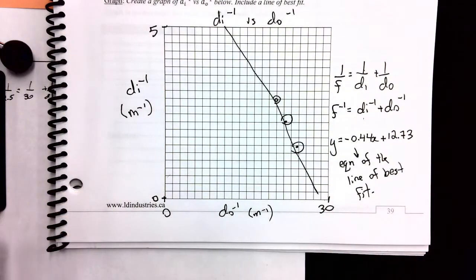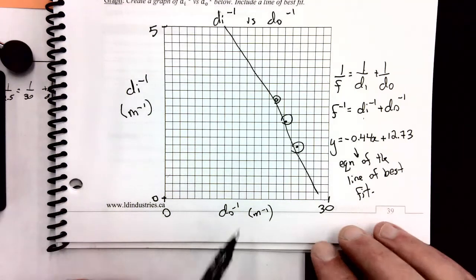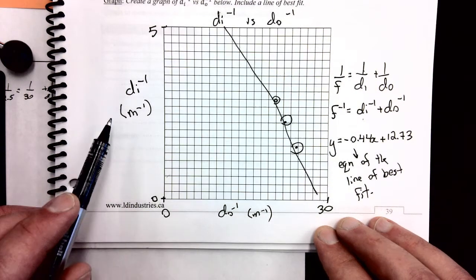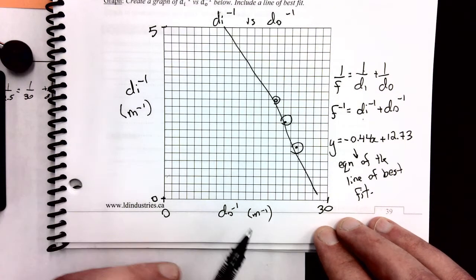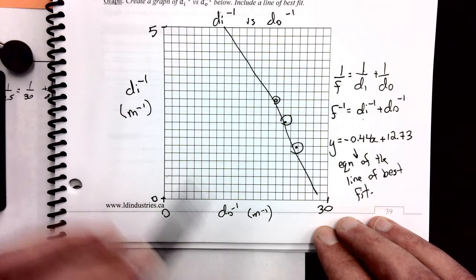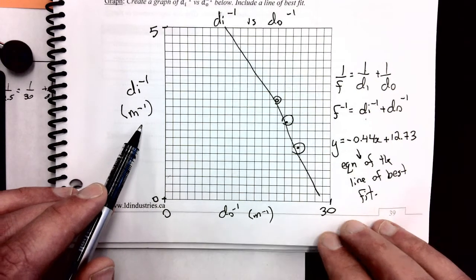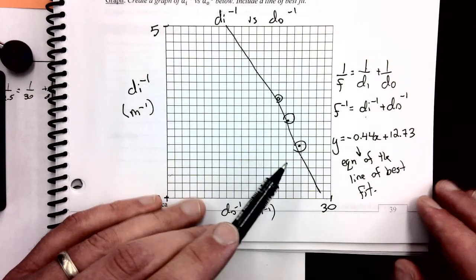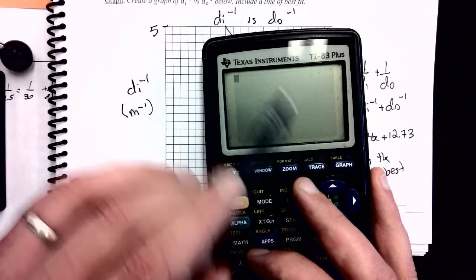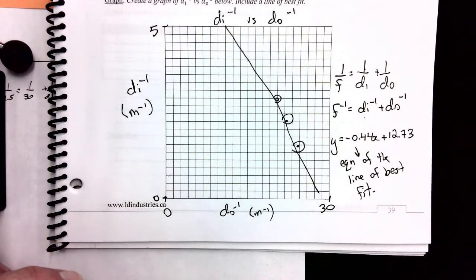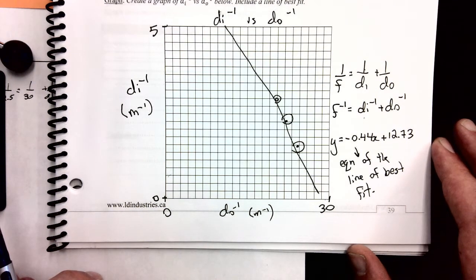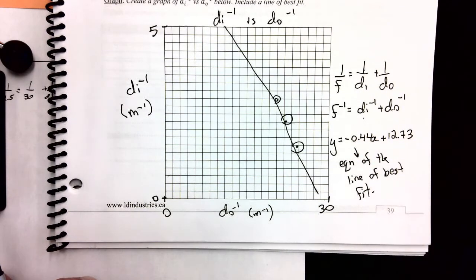On a diploma exam or a unit exam you're usually given the graph to start with, and you can be asked how to manipulate the data in order to get a straight line graph. A really common diploma question is: what should you do to the values of di and do — should you square them, put them to the power of negative 1, divide them by seven? You don't need to make the graph in the calculator on your diploma exam, but I can require that on a unit exam.